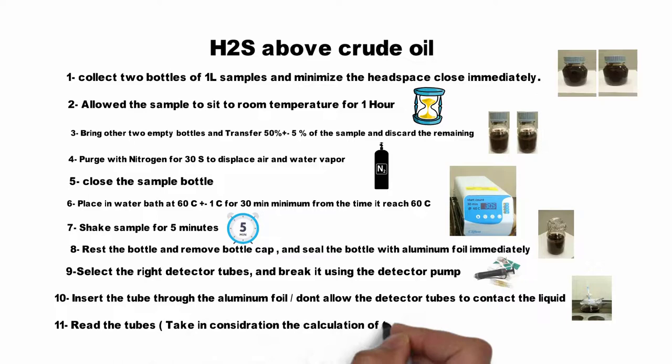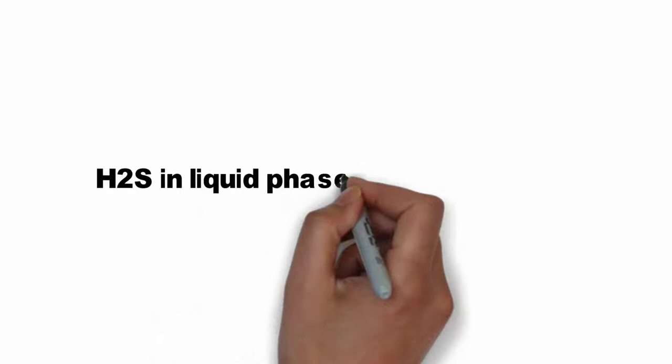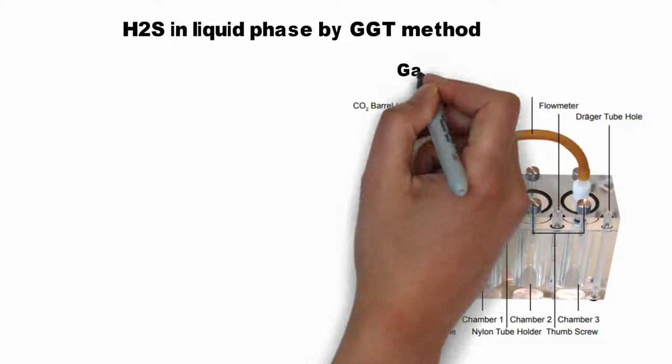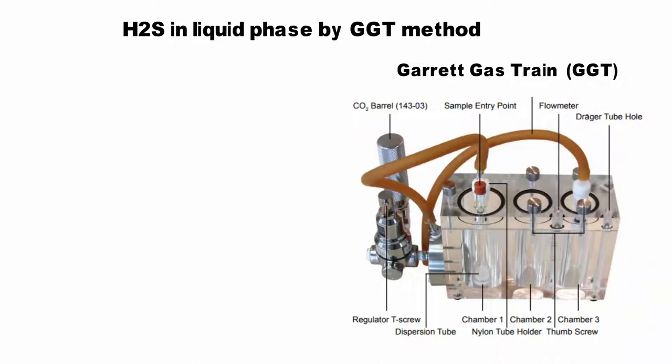For H2S in the liquid phase using the Garrett Gas Train method: the concentration of soluble sulfides — including hydrogen sulfide, bisulfide and sulfide ions — will be determined using this method. A mud filtrate is acidified in the gas train, which converts all sulfides to H2S.